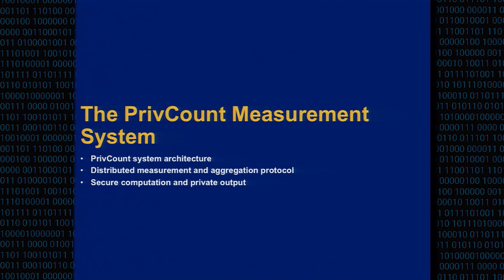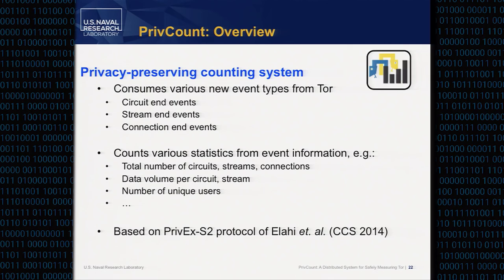Next I'll talk about the system we developed and deployed to measure Tor — the architecture, the protocol, and why it's safer than previous approaches. We designed a system called PrivCount, a privacy-preserving counting system. PrivCount consumes various types of events from the Tor process, such as circuit, stream, and connection end events. Using that information, it counts various statistics such as total number of circuits, streams, and connections in the network, data volume per circuit and stream, and number of unique users connecting to our measuring nodes. The protocol PrivCount is based on is the PrivX S2 secret sharing protocol from Alahi et al, published at CCS in 2014.